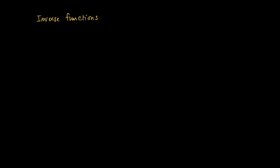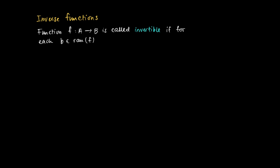This clip is about inverse functions. A function F defined on the set A — suppose I take a function F: A → B — then this function is called invertible if for each b in the range of F, there is a unique a in A that is mapped onto b. So each b in the range of F has a unique original.